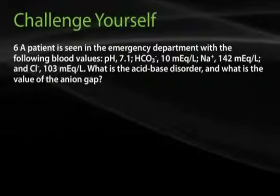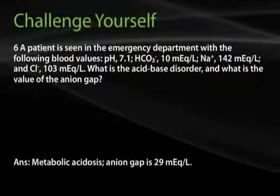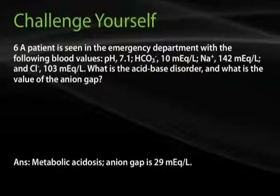Question 6: A patient is seen in the emergency department with pH of 7.1, bicarbonate of 10 mEq per liter, sodium of 142, and chloride of 103. What is the acid-base disorder and what is the anion gap? The answer is metabolic acidosis with an anion gap of 29 mEq per liter. The anion gap is calculated as sodium (142) minus the sum of chloride and bicarbonate (103 + 10 = 113), giving 142 − 113 = 29 mEq per liter.